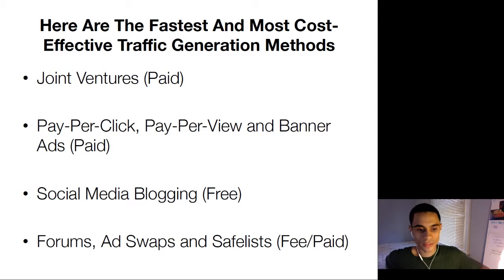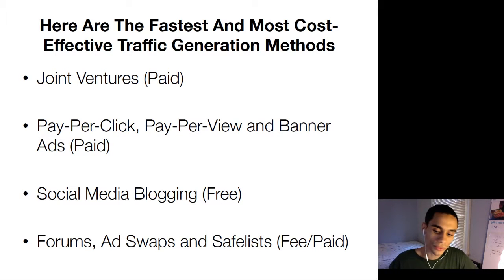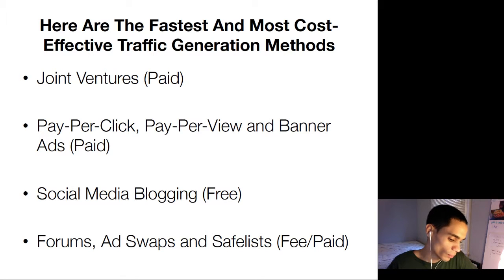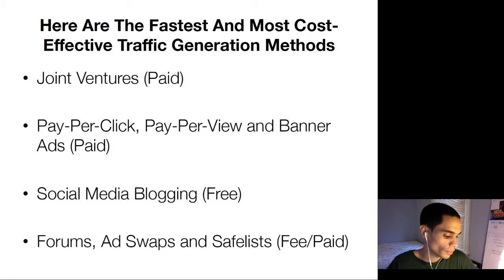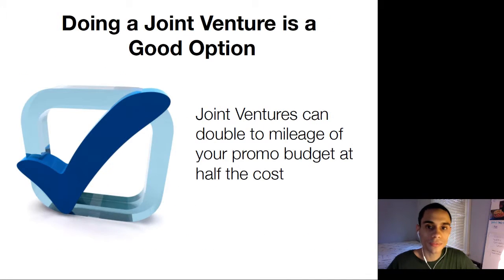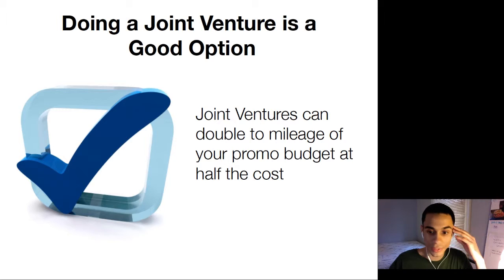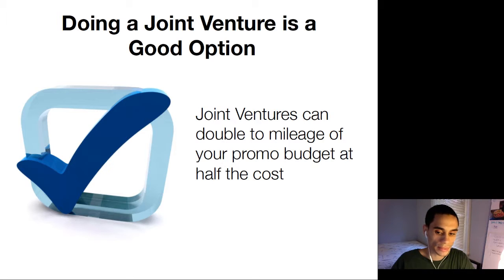The other free traffic strategies we spoke about are social media, forums, ad swaps, and safelists — you can do paid versions of these too. You can even swap lists: if you have a lot of followers and subscribers, you can swap with someone else who has the same, and you might be able to do it for free. The joint venture is a good option like I mentioned — this can really increase your revenue if you choose wisely.